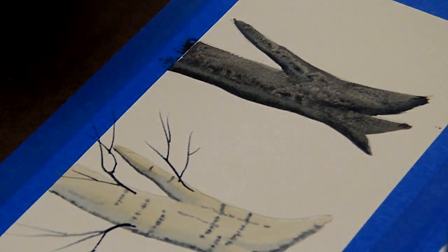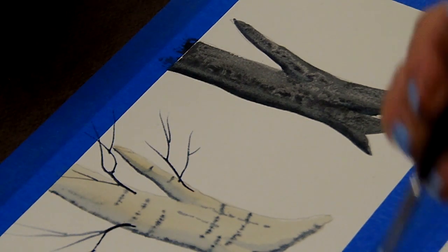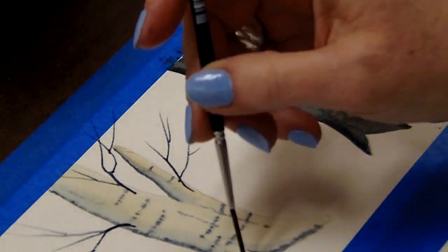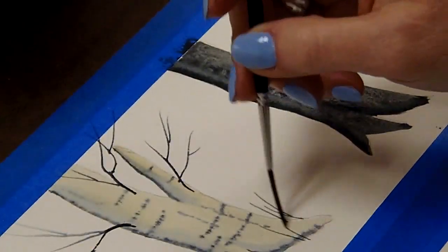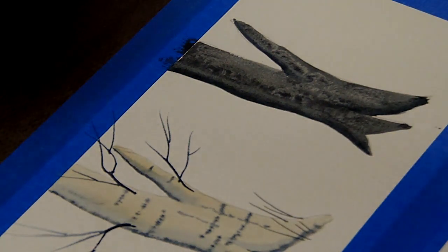Next I'm going to add a little bit of grasses around the base. So again, I'm rolling my brush into some darker greens, a little bit of Payne's gray. You can certainly add blades of grass around the sides and behind. So just to get a feeling of the grasses around it.